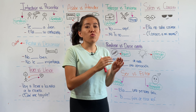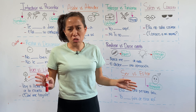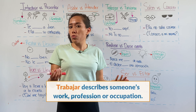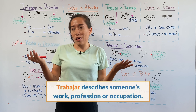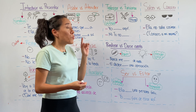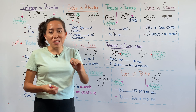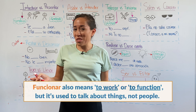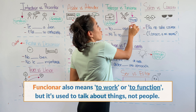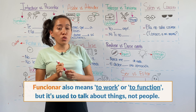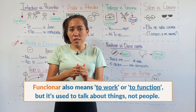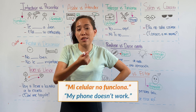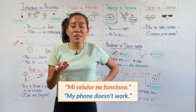Trabajar versus funcionar. Trabajar is usually not the problem — many people know that trabajar relates to profession or occupation, as in yo trabajo mucho, I work a lot. The problem is knowing when to use funcionar. In Spanish, funcionar also means to work, but we use it to talk about things that work or don't work — processes, systems, or devices. For example, mi celular no funciona, my phone doesn't work.